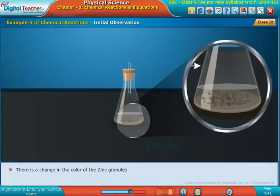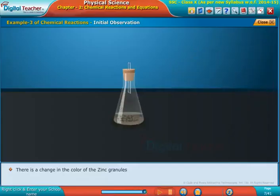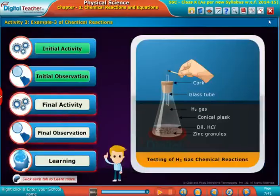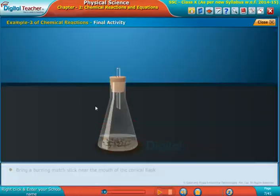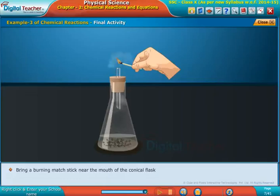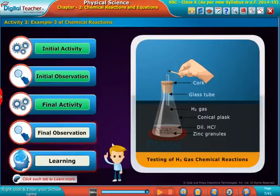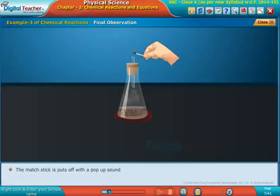Bring a burning matchstick near the mouth of the conical flask. The matchstick is put out with a pop sound.